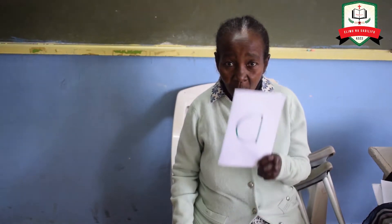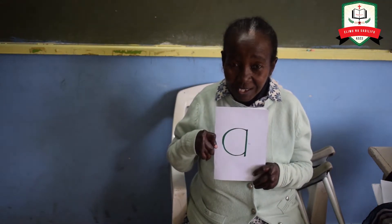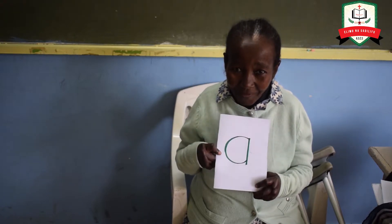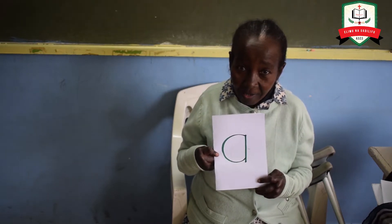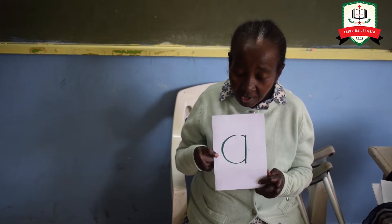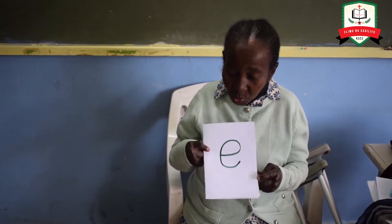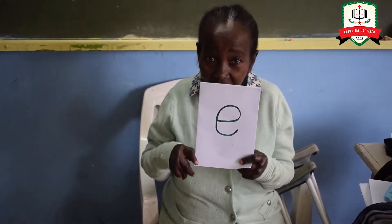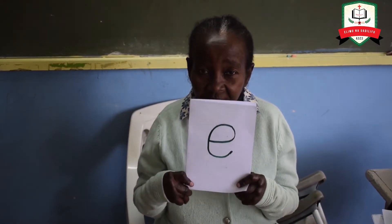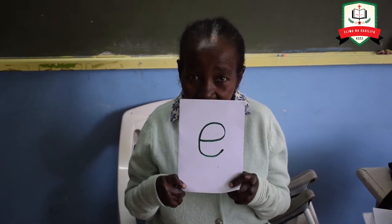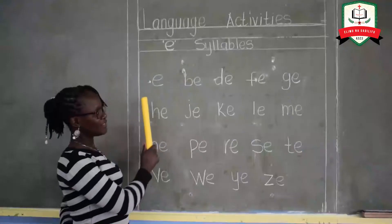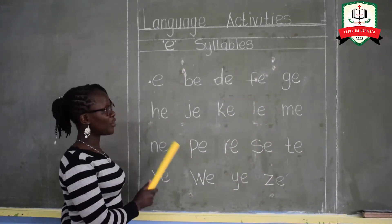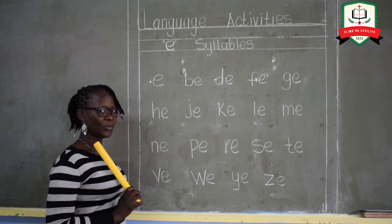Remember we've been learning syllable A — we did syllable A and we also read the syllable A with the sound. Today we are going to learn how to read sounds with syllable A, and these sounds are on the blackboard. These are A syllables. I am going to read as you listen. Okay?